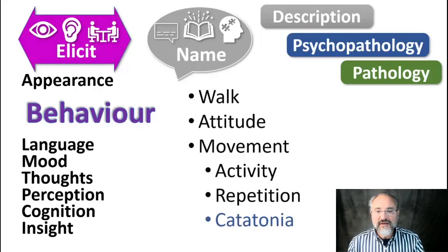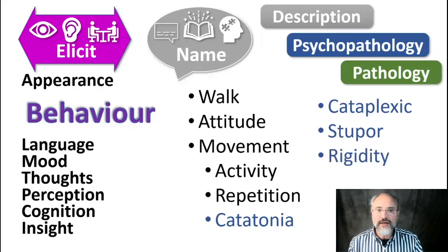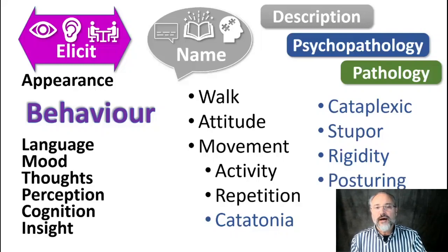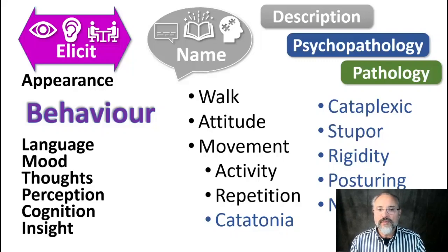Lastly, there are specific movements linked to schizophrenia. Catatonia is when they move very little. Cataplexy is sudden loss of tone. Stupor is when they are unable to respond to any stimulus at all. You also describe whether they appear rigid, whether they're posturing — holding abnormal postures against pressure — or showing negativism, when they do the opposite of what is asked. These are specific words to describe movements linked to schizophrenia.